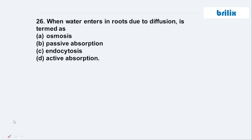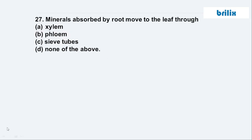Next question: When water enters into the root due to diffusion, it is termed as passive absorption — option B. That kind of transport is known as passive absorption. Question 27: Minerals absorbed by roots move to the leaves through — the right answer is xylem, option A.